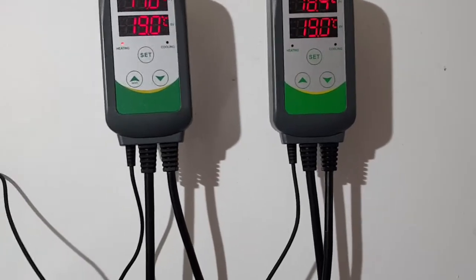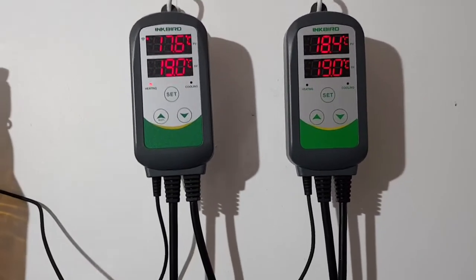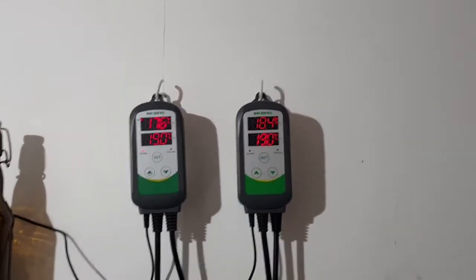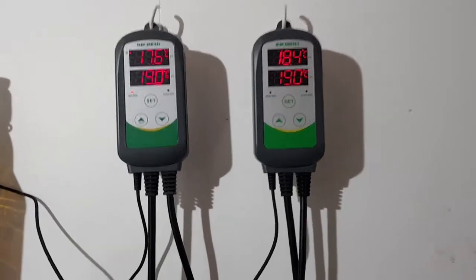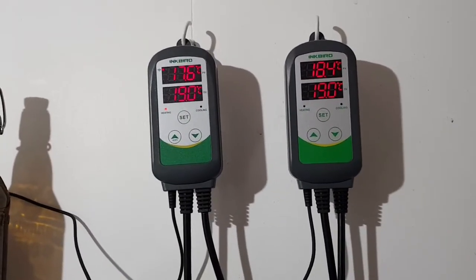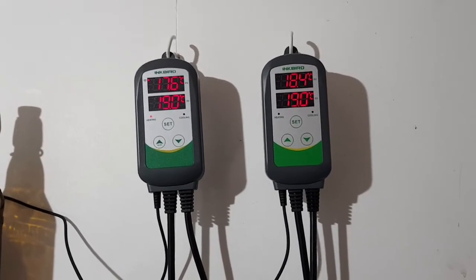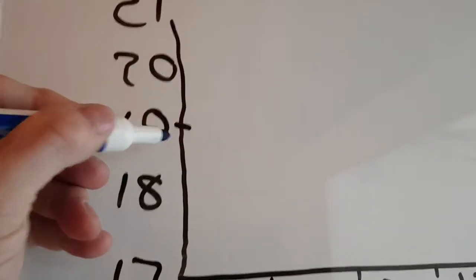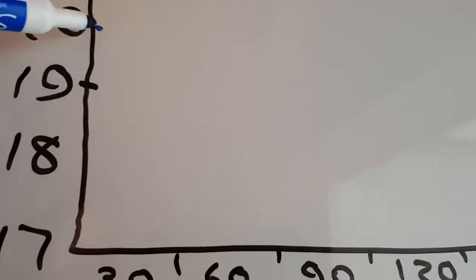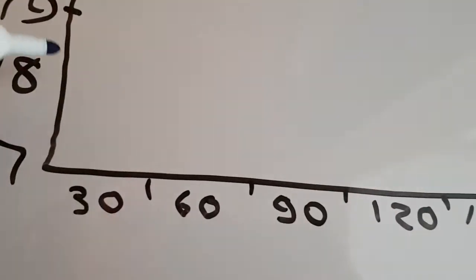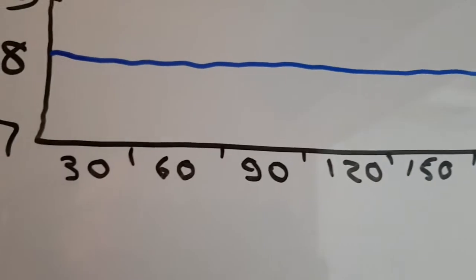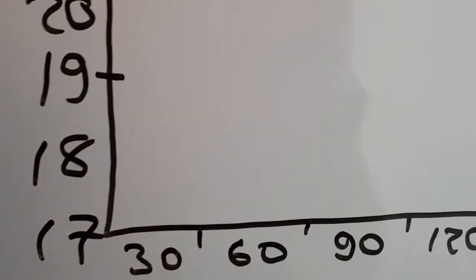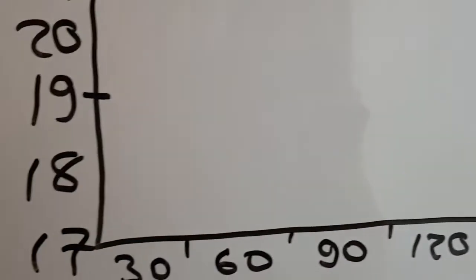I'll talk for a second about useful features of the Inkbird. One is you can calibrate them fairly easily. The second is they have a feature where you can set the amount of temperature differential before a heater kicks in or the cooler kicks in. This is a whiteboard on the back of door. I like mine to be at 19 degrees. Let's suppose I set the temperature differential to be one degree either side, and then down here we'll set it to be two degrees either side.